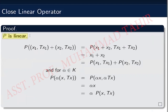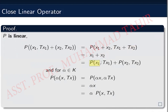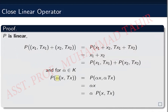We will prove that this operator P is bijective, linear, and bounded, so that we can use the bounded inverse theorem. First, we show P is linear. For vector addition, take two vectors from the domain and form the ordered pairs (x1, Tx1) and (x2, Tx2). The projection of (x1, Tx1) plus (x2, Tx2) gives x1 plus x2, showing linearity for addition. For scalar multiplication, P of alpha times (x, Tx) gives alpha times x, which equals alpha times P(x, Tx). Therefore P is a linear operator.